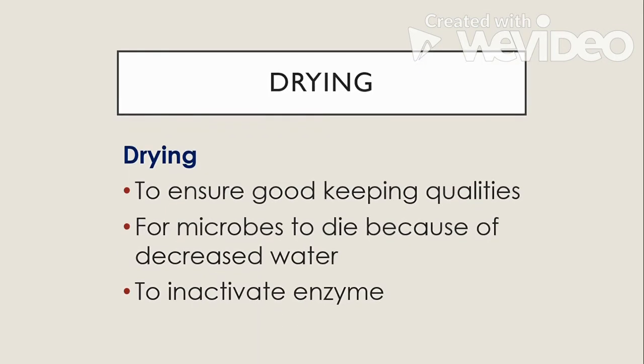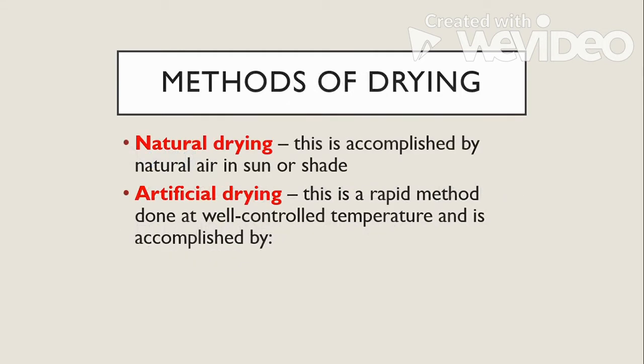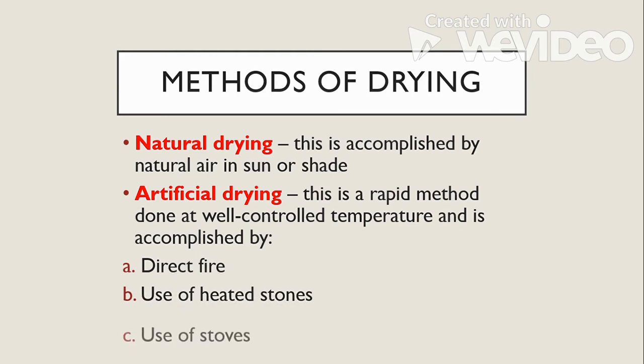Next is drying. Drying is done to ensure good keeping qualities, for microbes to die because of decreased water content, to inactivate enzymes, and also to reduce size and weight. Drying is carried out by either natural or artificial methods. Natural drying is accomplished by natural air, sun, or shade. Artificial drying is a rapid method done at well-controlled temperature and is accomplished by direct fire, use of heated stones, or use of stoves.